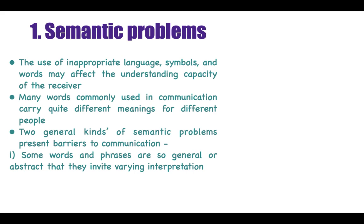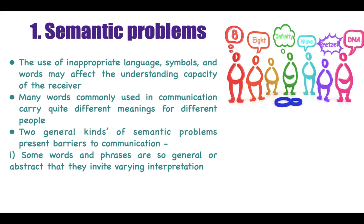For example, in this photograph you can see a symbol on the floor. Different people interpret it differently — some see it as an eight, some as infinity, some as a wave, one as a pretzel, and another as DNA. A simple symbol can have different meanings to different people, causing a semantic problem and ultimately a barrier to communication.